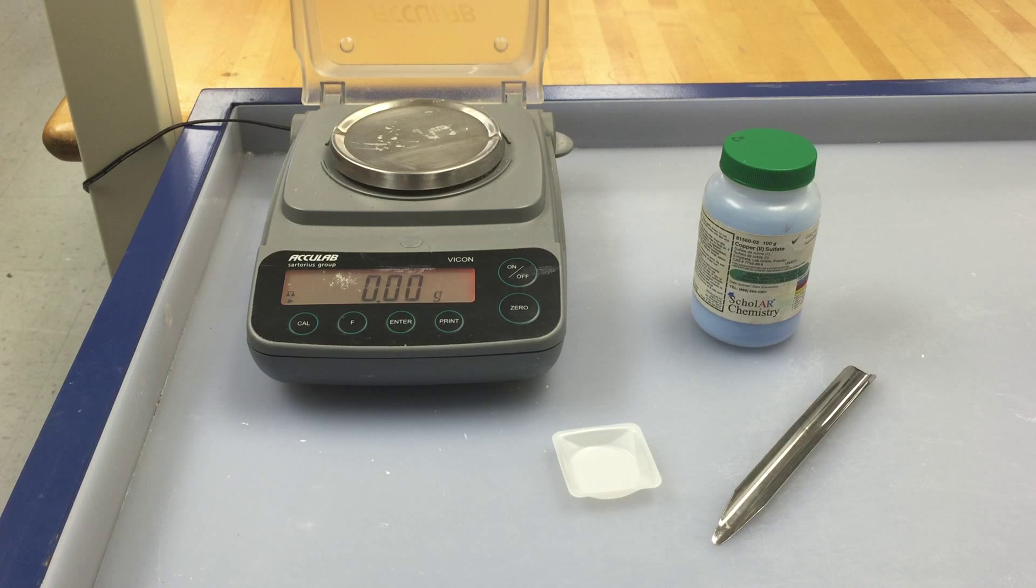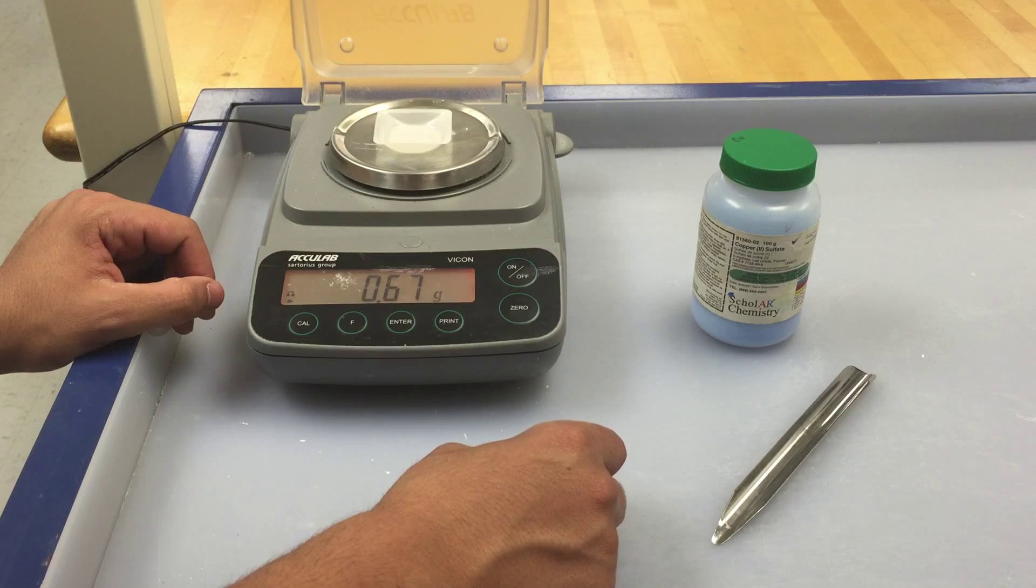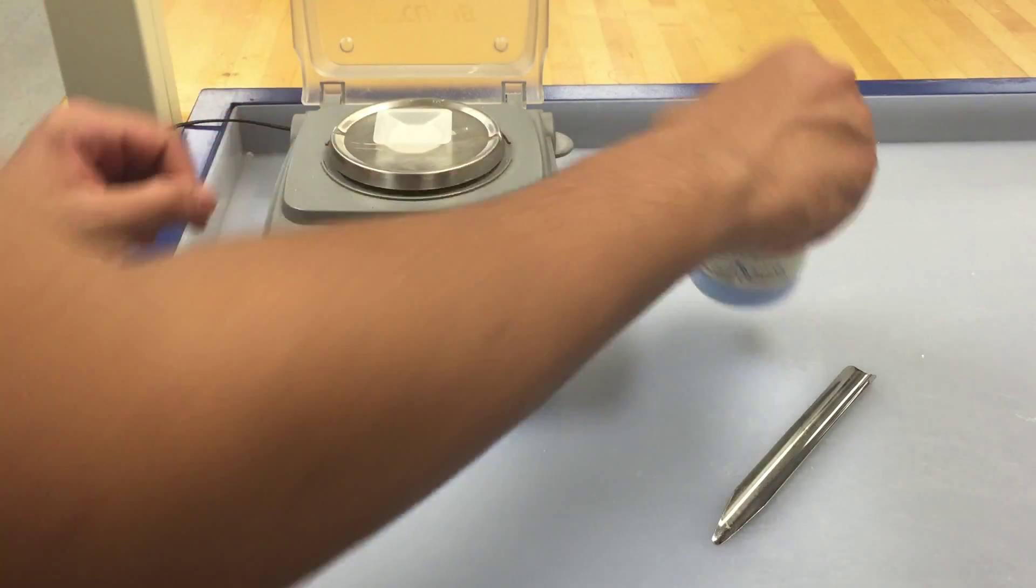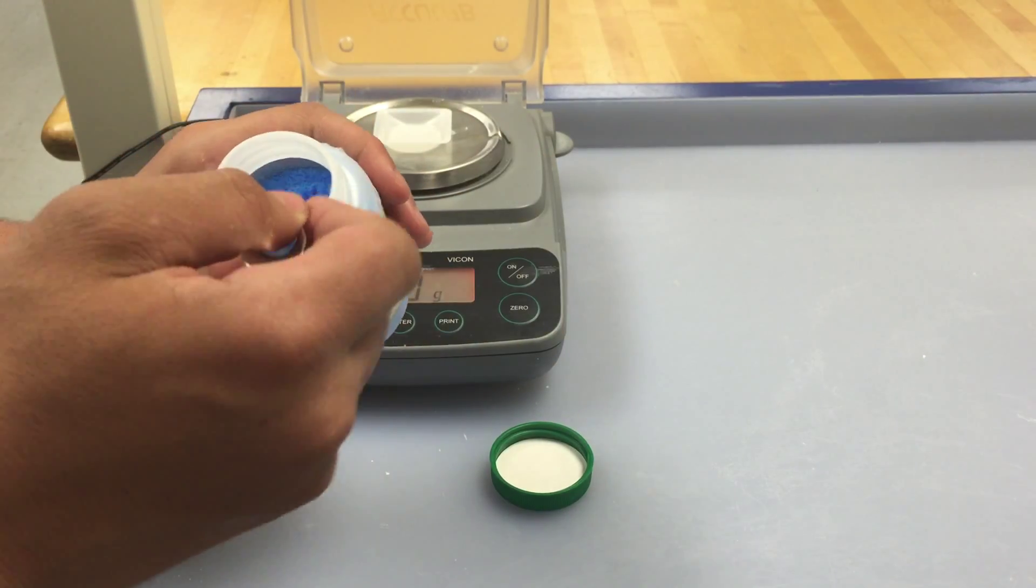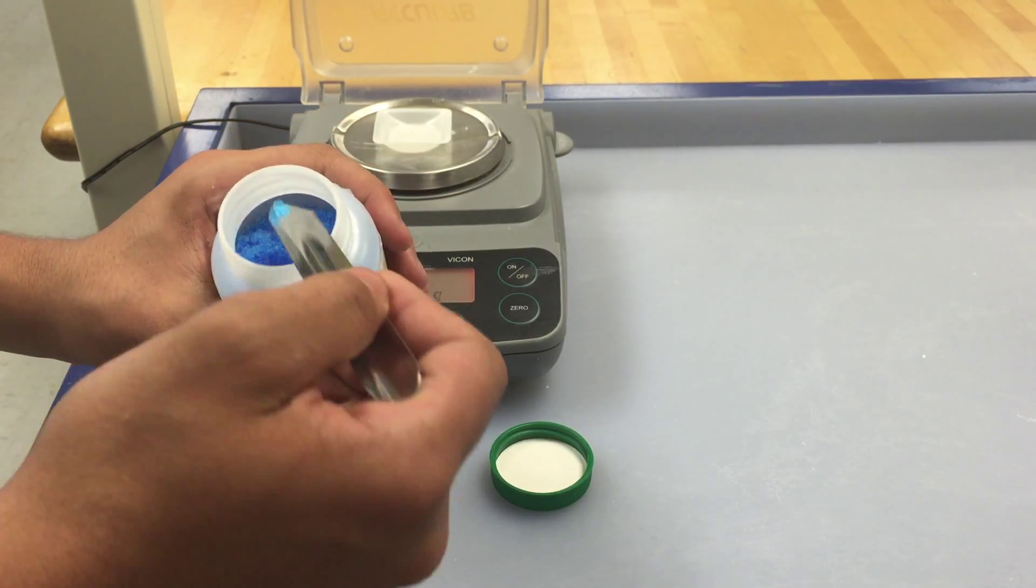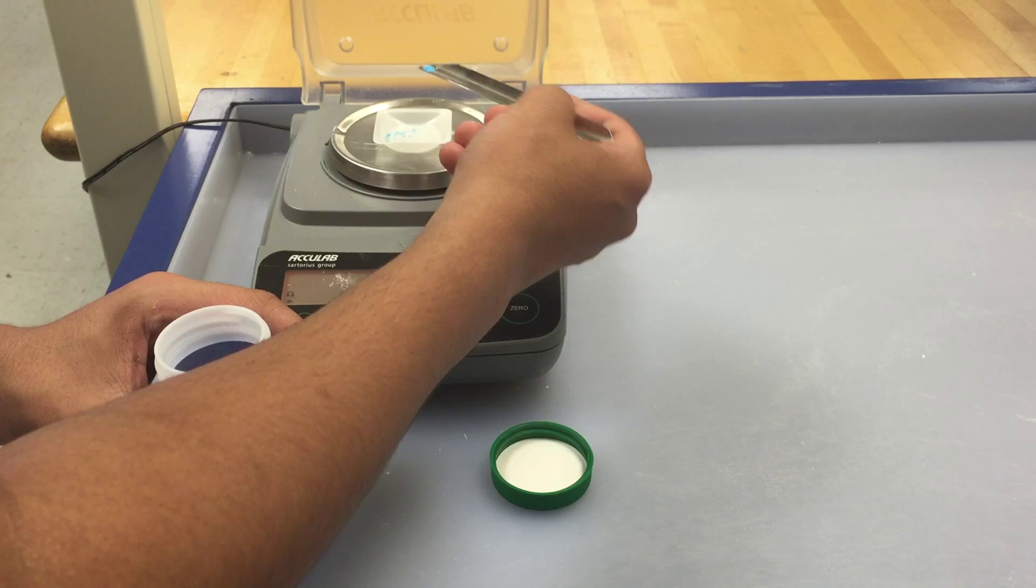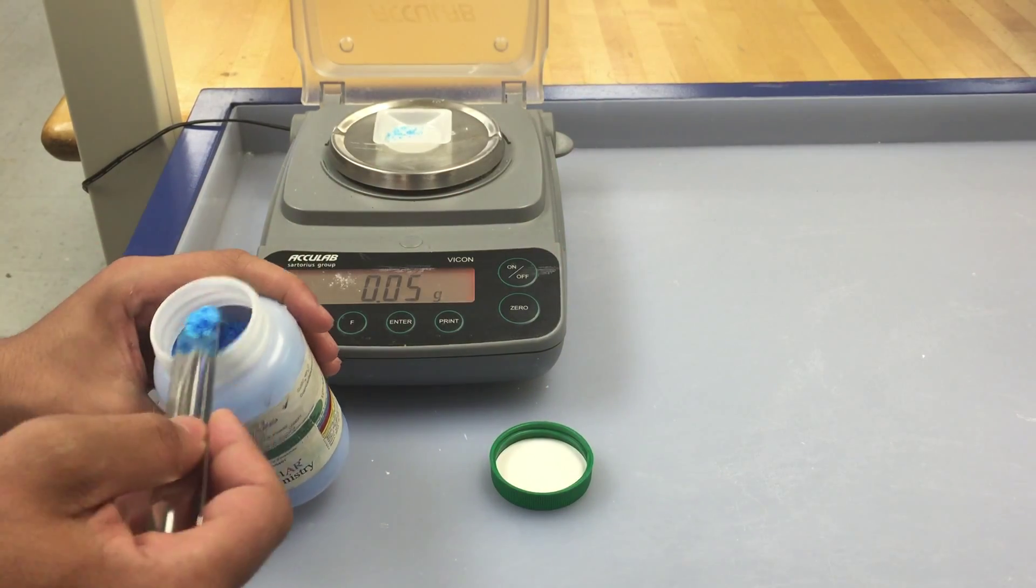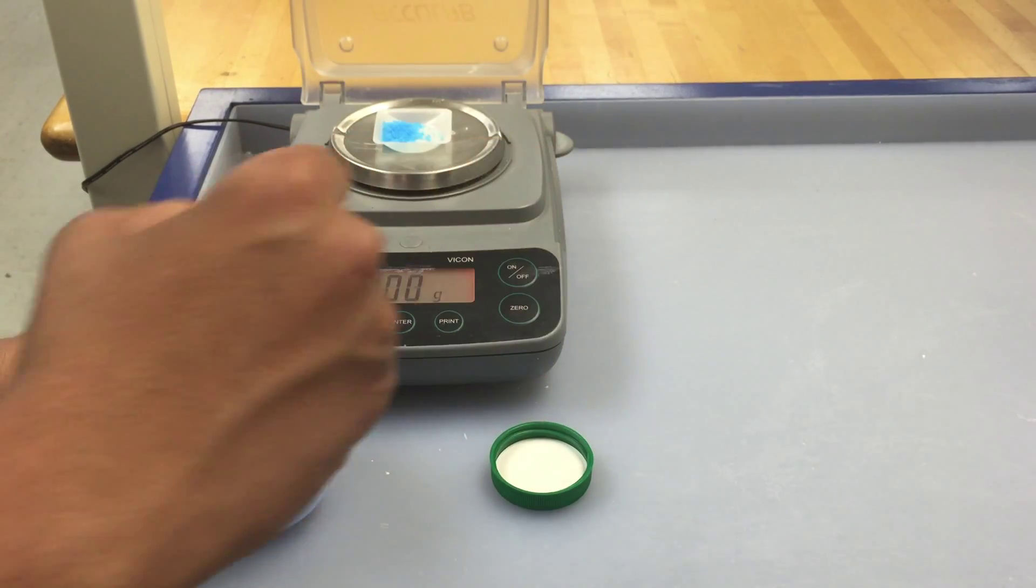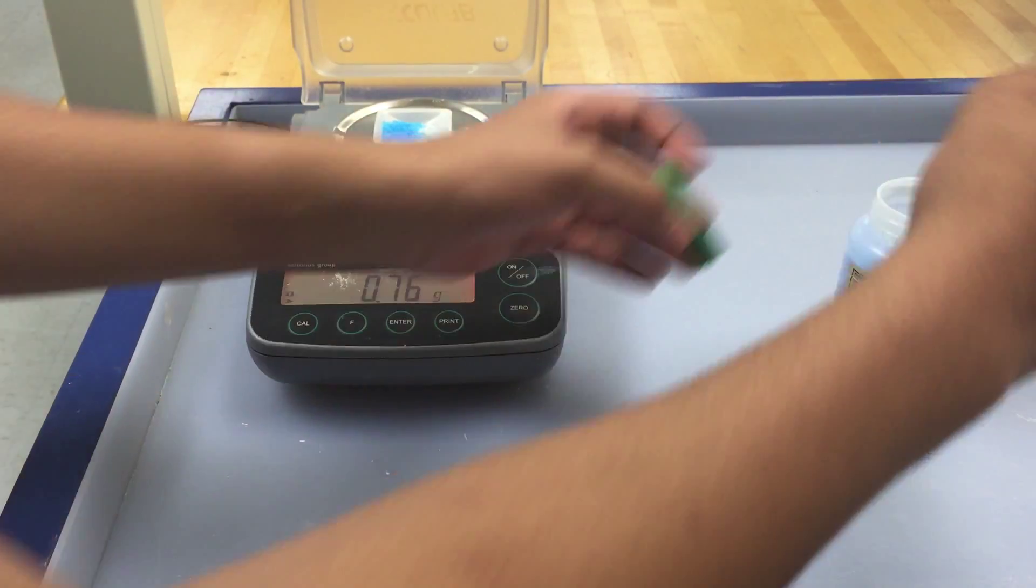To prepare a solution, first you need a balance, a weighboat, a solid substance, and a scupula. Take the weighboat and put it on the balance. Make sure to tare it, which is setting the balance to zero, so that you can accurately measure how much solid substance you're using. In this case, our solid is copper sulfate. Use the scupula to transfer your solid onto the weighboat. Try not to spill any of the solid onto the actual balance, because then the measurement will be off. When you're done, record the amount and close the bottle.